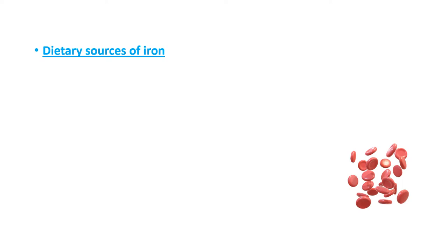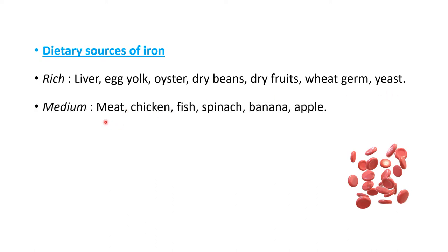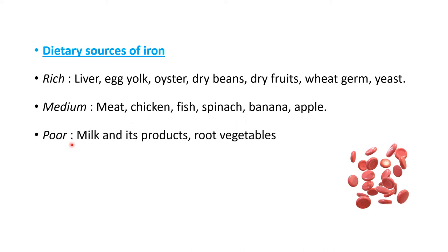Dietary sources of iron: rich sources include liver, egg yolk, oyster, dry beans, dry fruits, wheat germ, and yeast. Medium sources include meat, chicken, fish, spinach, banana, and apple. Poor sources of iron are milk and its products, and root vegetables.